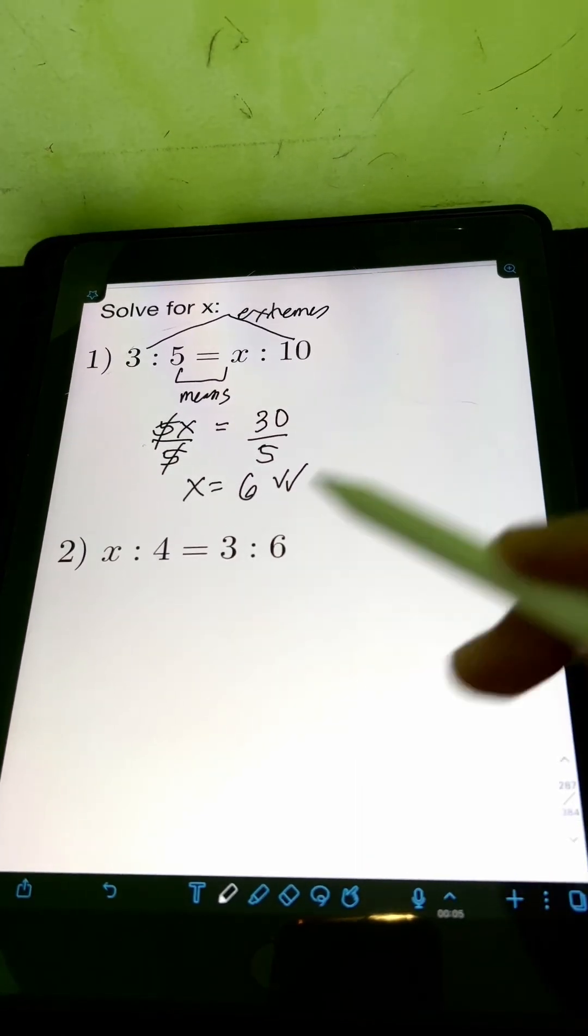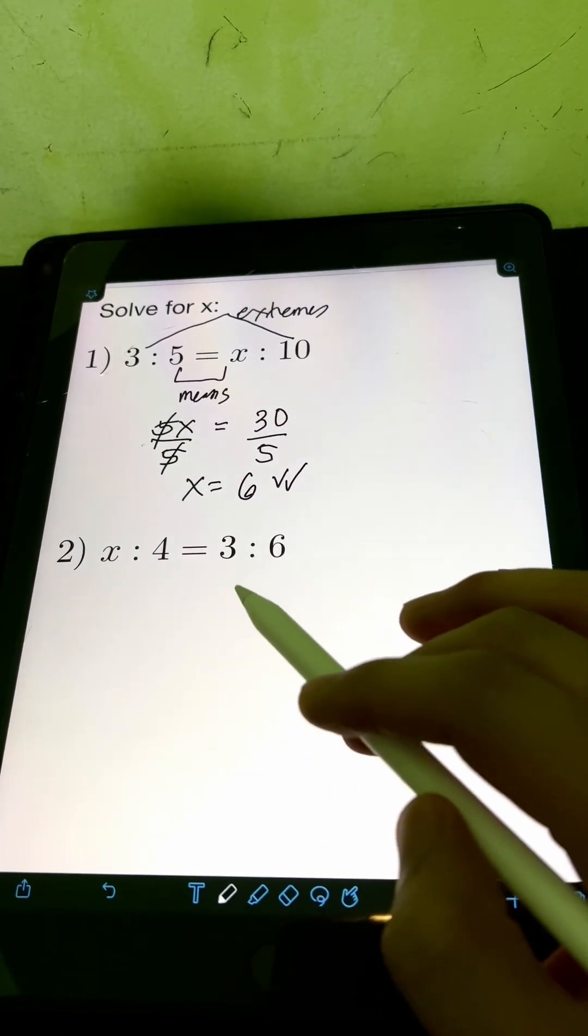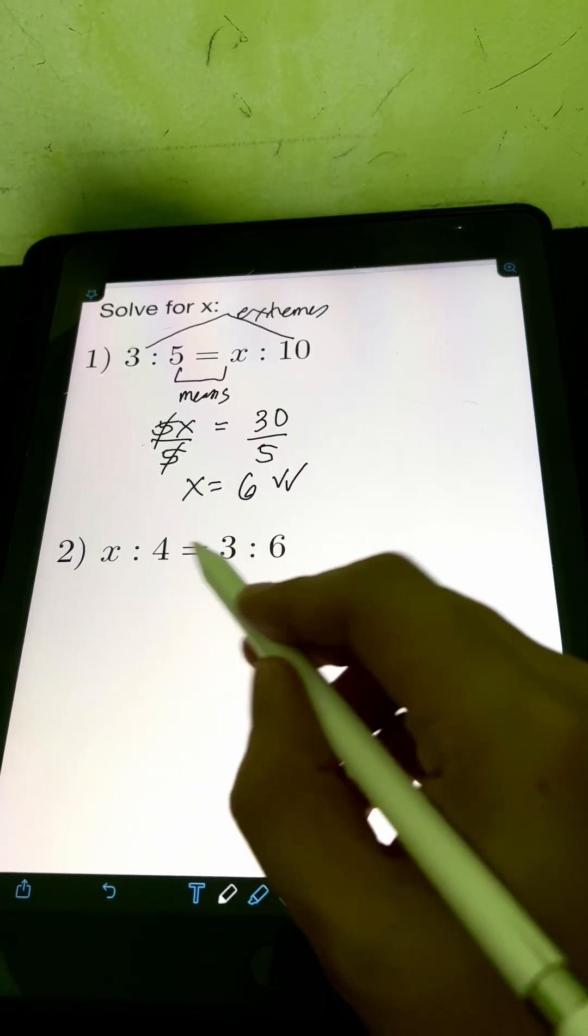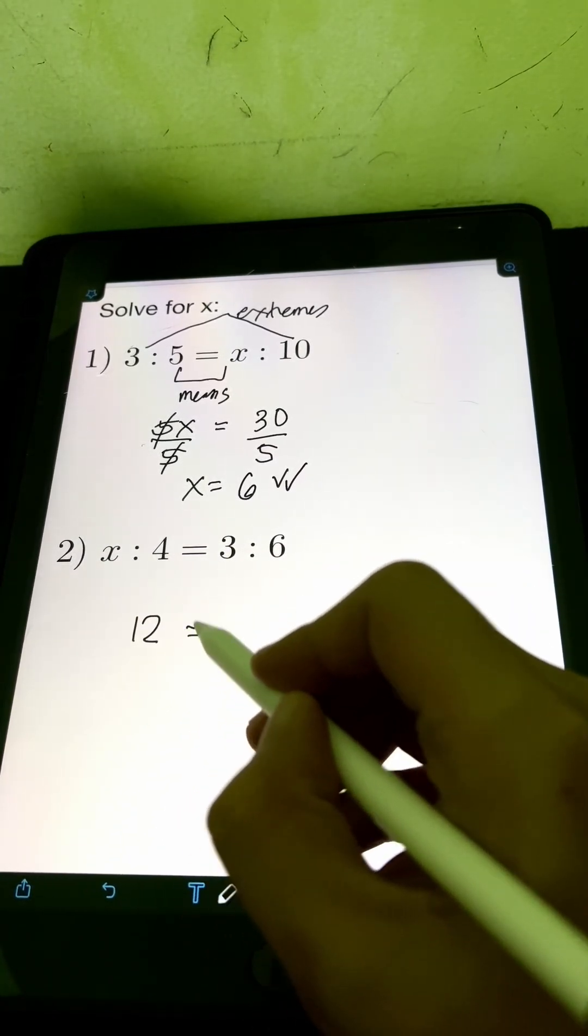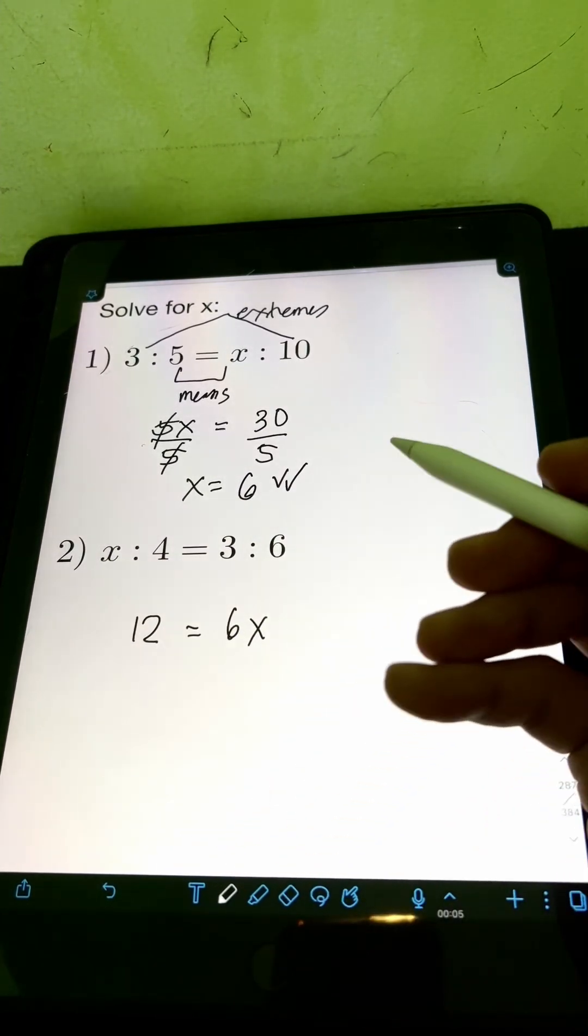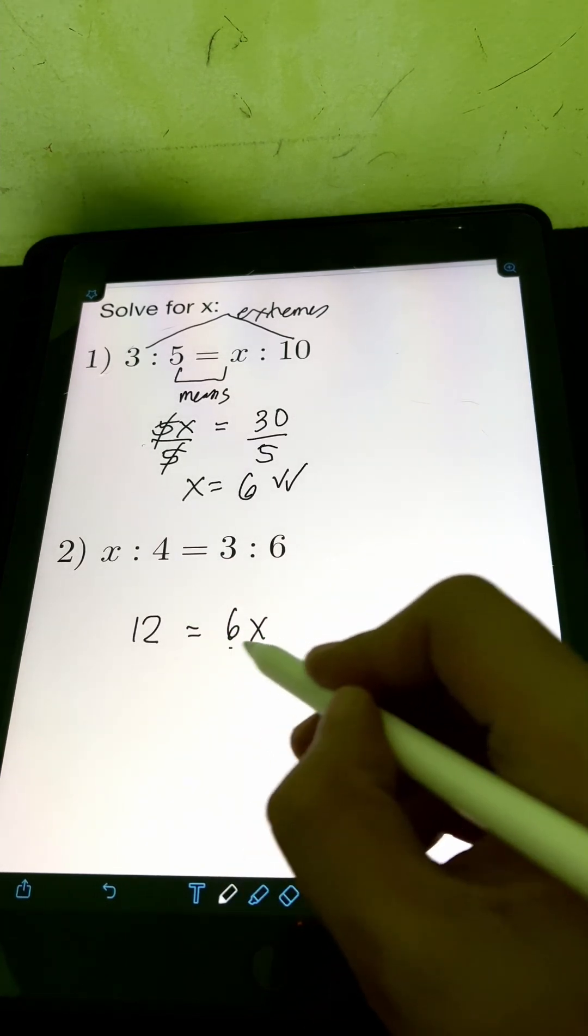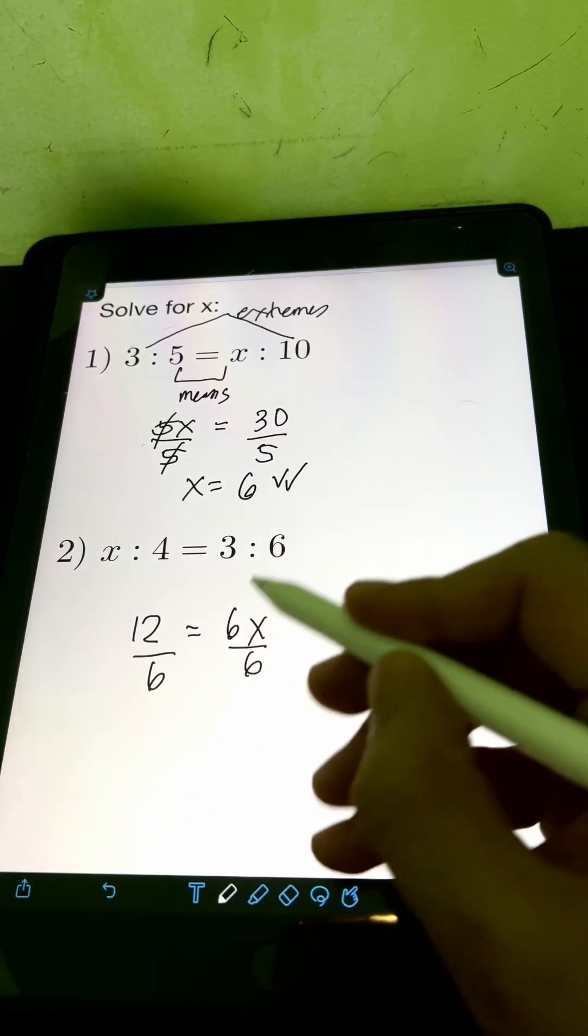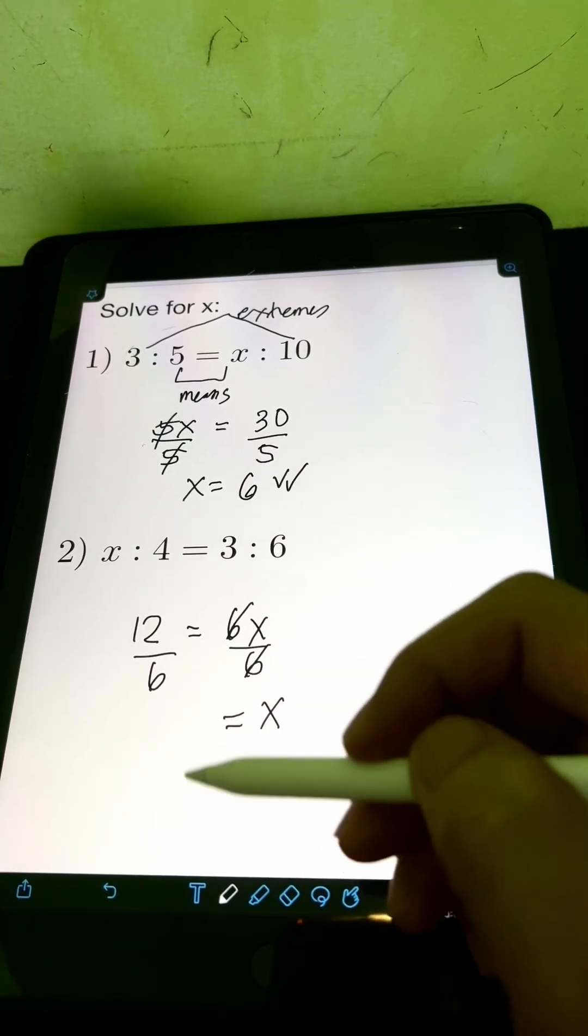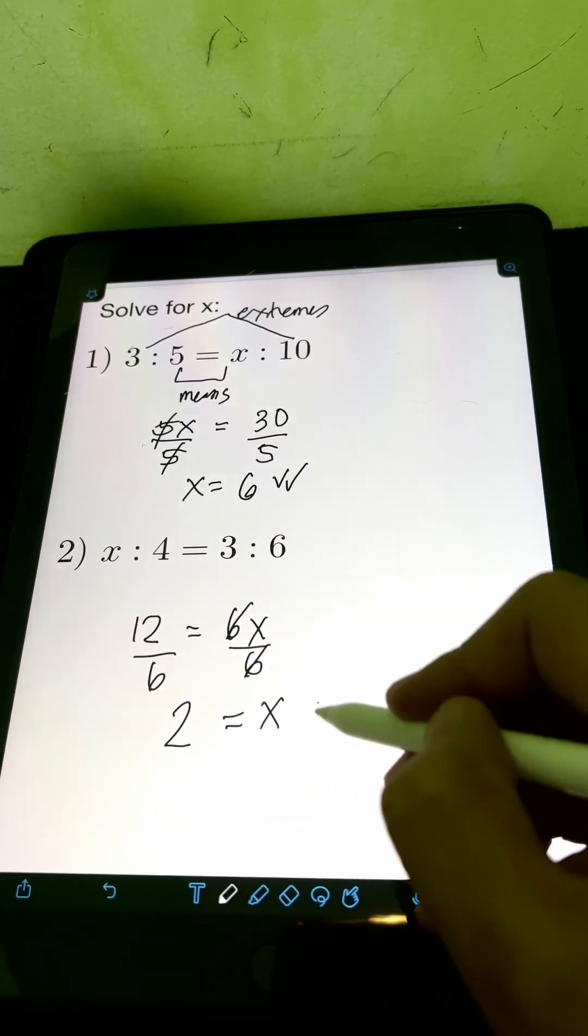For number 2, we have x is to 4 is equal to 3 is to 6. Again, let us equate the product of the means, 4 times 3, that's 12, to the product of the extremes, 6 times x or 6x. Then we can solve for x by dividing both sides by 6. Cancelling out 6, x is equal to 12 divided by 6 or 2.